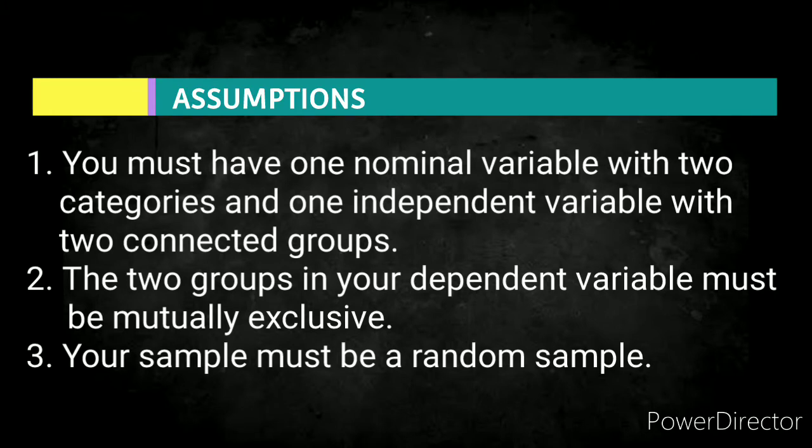Assumptions for McNemar Tests. First, you must have one nominal variable with two categories, for example, dichotomous variable such as yes or no question, and gender - female and male - and one independent variable with two connected groups. Second, the two groups in your dependent variable must be mutually exclusive. In other words, participants cannot appear in more than one group.